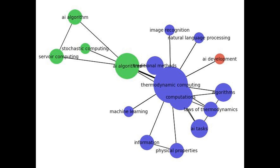Thermodynamic computing is a new field that explores the use of thermodynamics to perform computations. It is based on the idea that information can be encoded in the physical properties of a system, such as its temperature, volume, and pressure. By manipulating these properties, it is possible to perform computations in a way that is much more efficient than traditional methods. One of the most promising applications is in the field of artificial intelligence, as AI algorithms are often computationally intensive, and thermodynamic computing offers a way to perform these computations much faster and with less energy consumption.